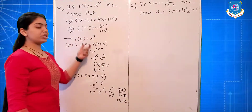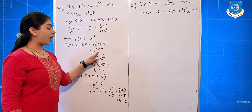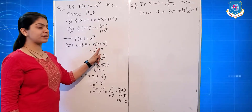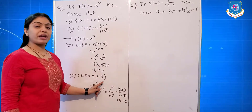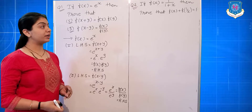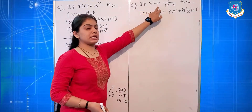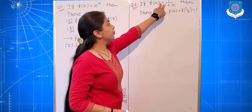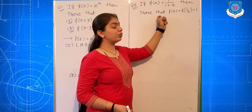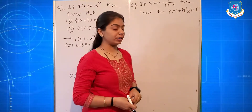Both parts are quite easy, but remember how to evaluate e raised to (x+y) and e raised to (x−y). Now, a similar type of question: if f(x) is equal to 1 upon (1+x), then prove that f(x) plus f(1/x) is equal to 1.